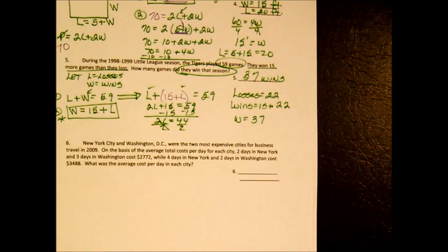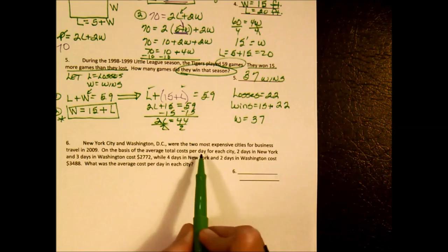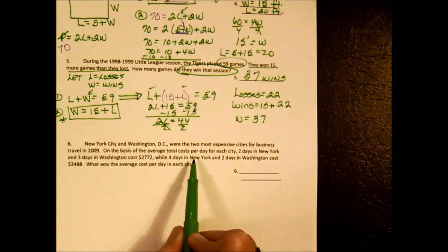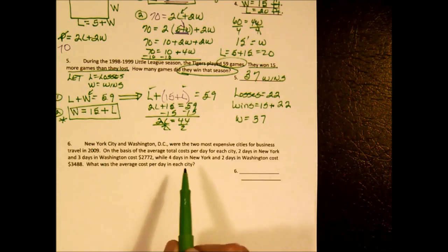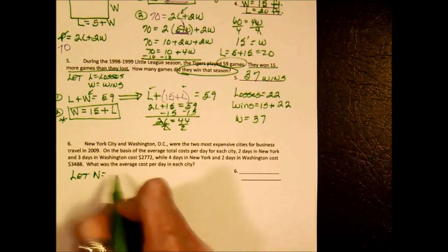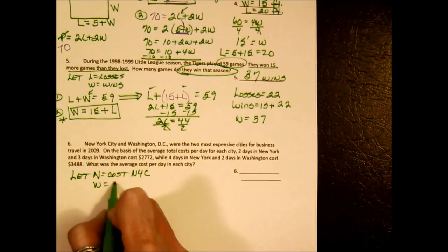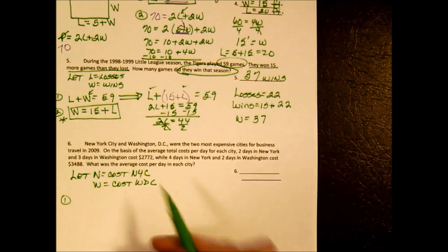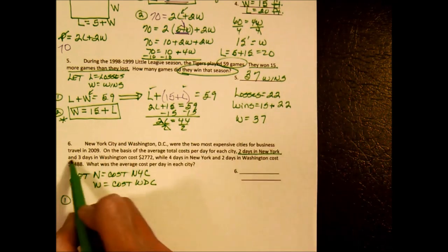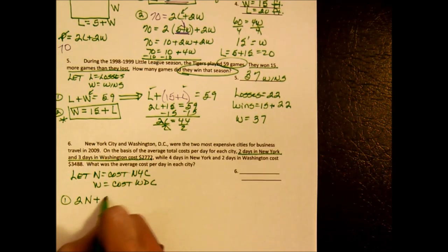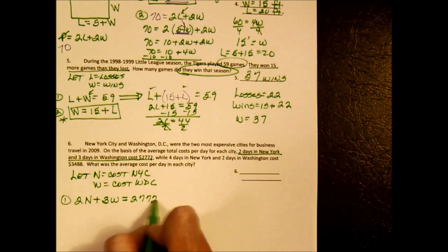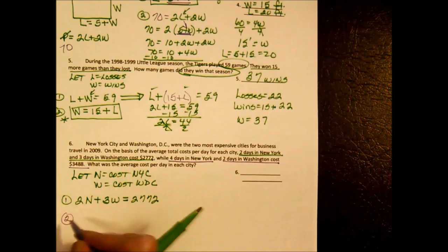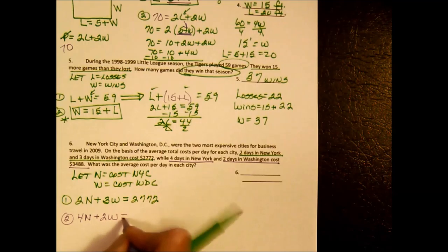This is a money problem. New York City and Washington D.C. were the two most expensive cities for business travel in 2009. Let N equal the cost per day in New York and W equal the cost per day in Washington D.C. Two days in New York and three days in Washington cost $2,772, and four days in New York and two days in Washington cost $3,488.